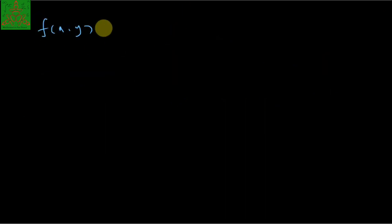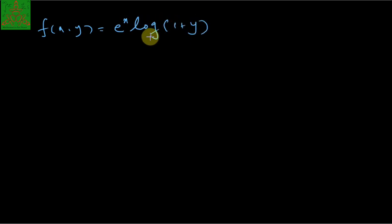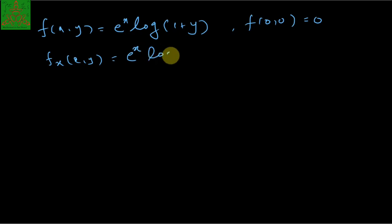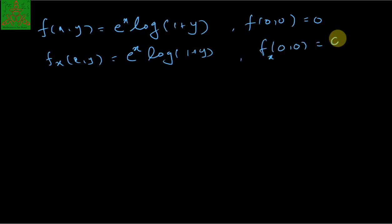The function f(x,y) = e^x · log(1+y). So f(0,0) = e^0 · log(1) = 1 · 0 = 0. For f_x: the partial derivative with respect to x is e^x · log(1+y), since the derivative of e^x is the same. Therefore f_x at (0,0) is again 0.